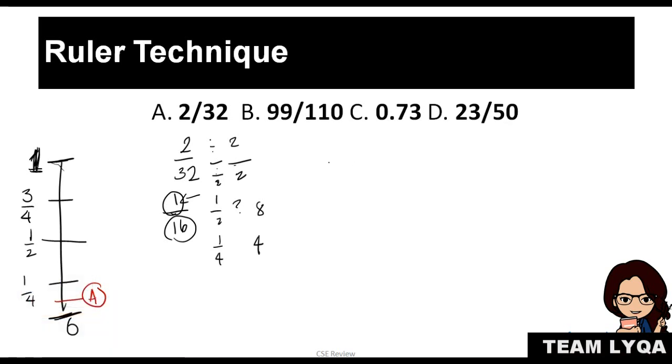99 over 110. You can ask yourself: can this be reduced to lowest terms? If you notice, they're both divisible by 11. So 99 divided by 11 over 11. 99 divided by 11 would be 9. 110 divided by 11 would be 10. Working with our concept: what is half? Half of 10 is 5. That means 5 over 10 is half. So it's higher than half.